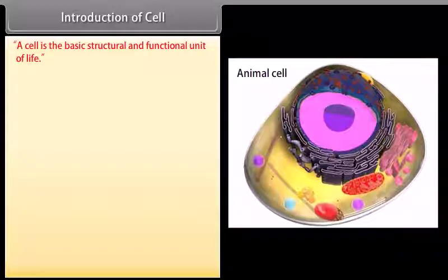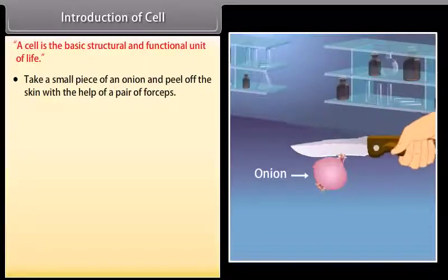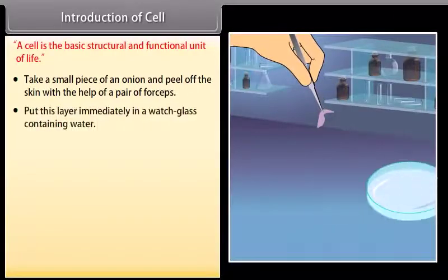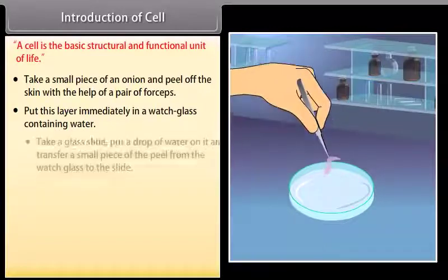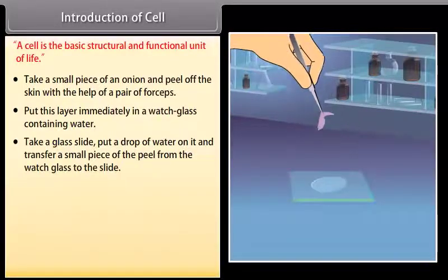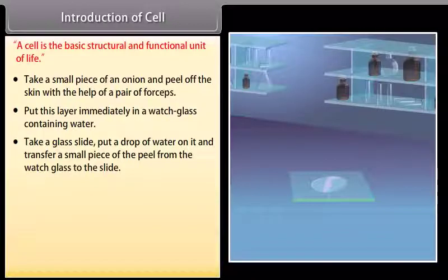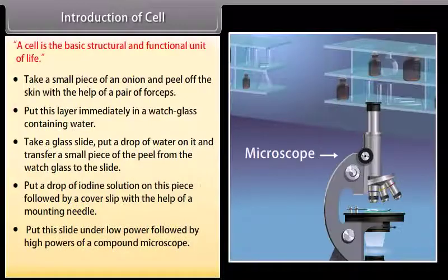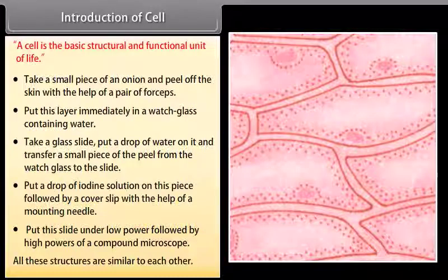A cell is the basic structural and functional unit of life. In an experiment, take a small piece of an onion and peel off the skin with forceps, place the layer in a watch glass containing water, then transfer a small piece to a glass slide with a drop of water. Add a drop of iodine solution and a cover slip, then observe under low and high power of a compound microscope. All these structures are similar to each other.